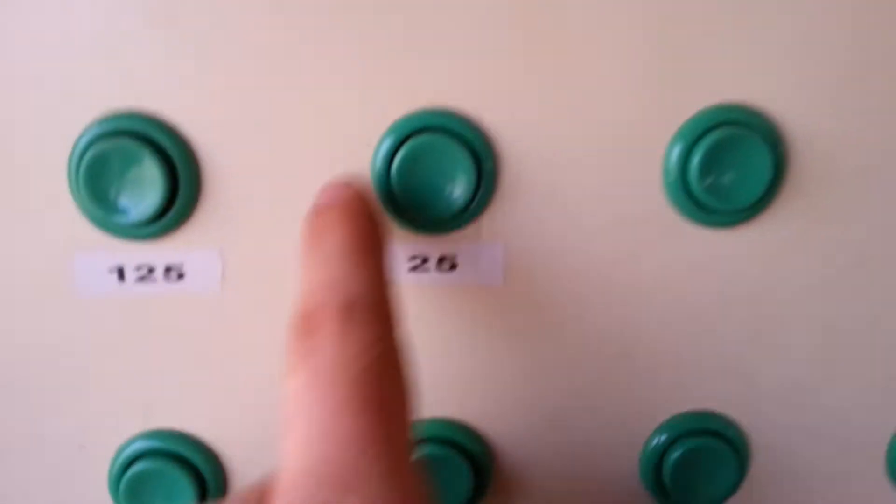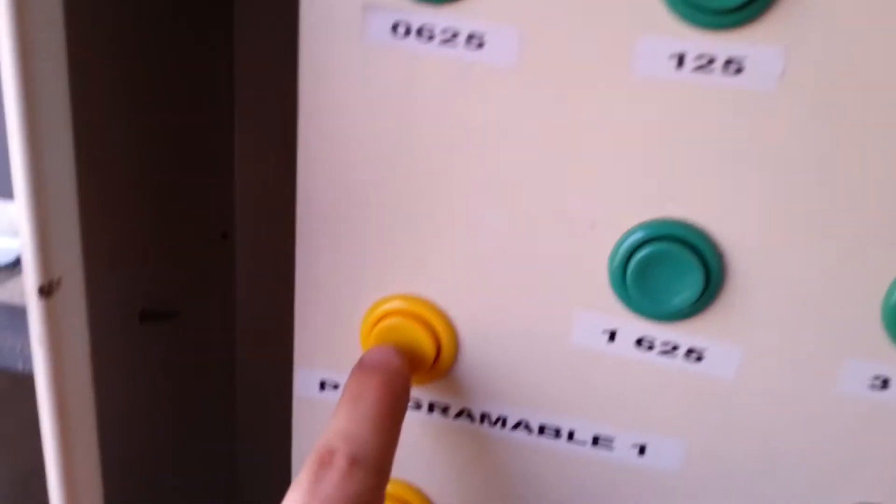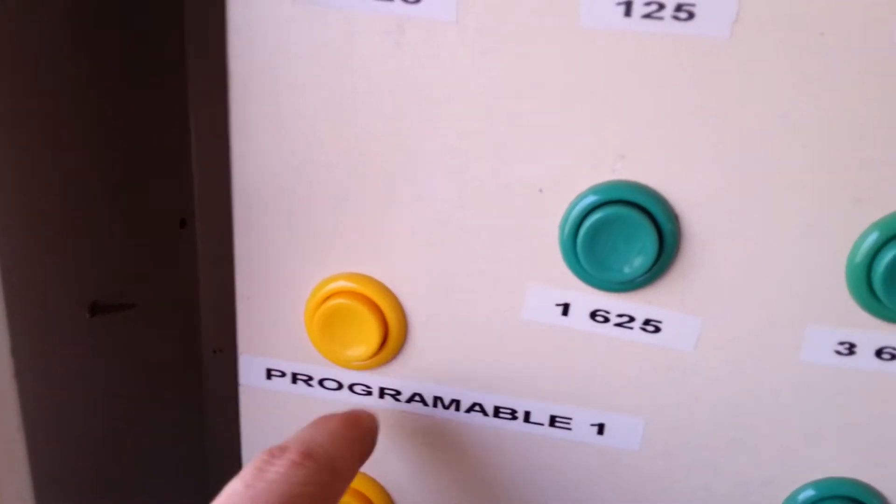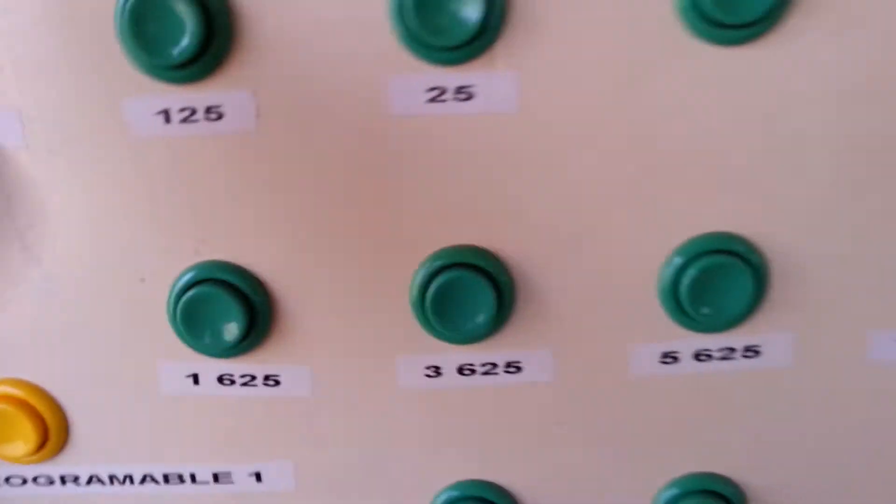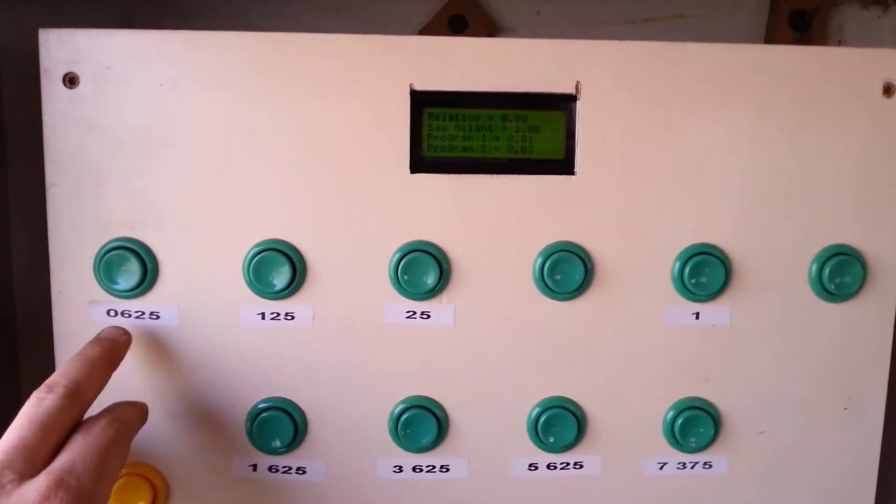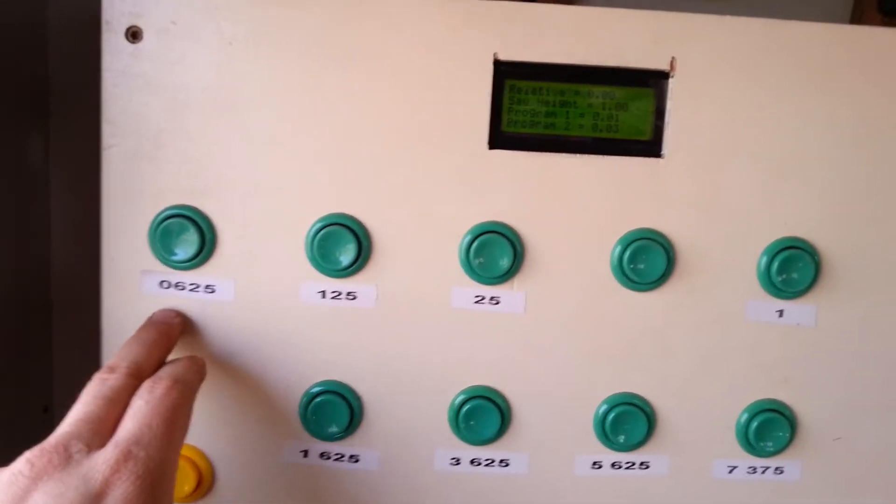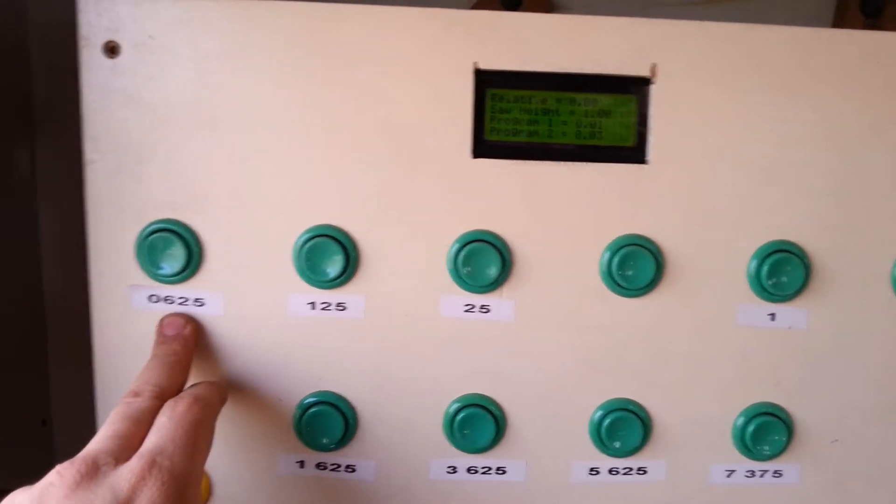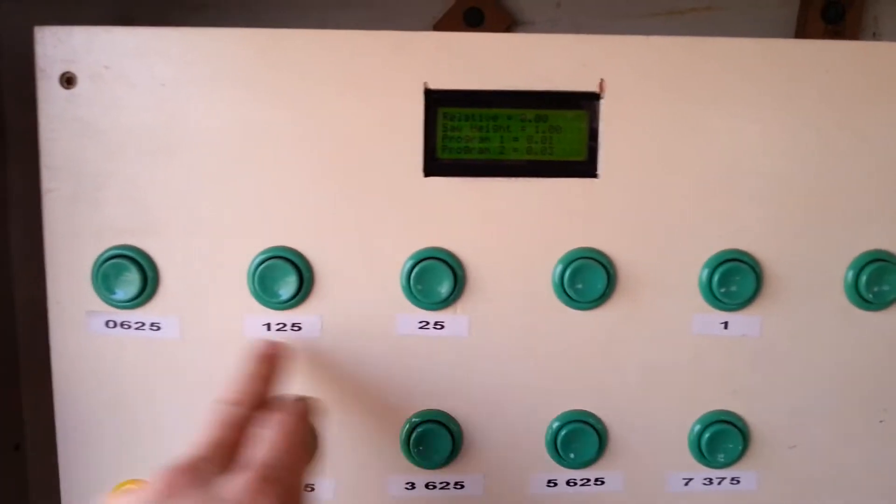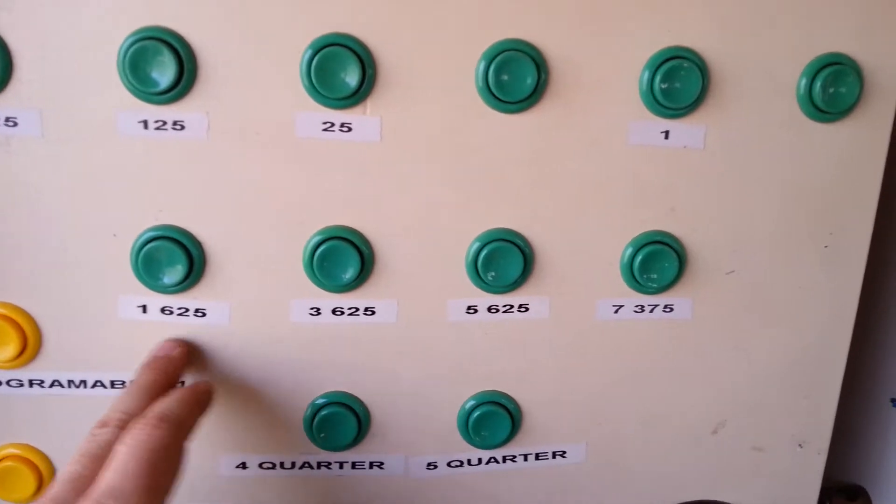They increment by multiples of two going up, so it's 1/16th, 1/8th, 1/4, 1/2, 1, 2. These are for building material - 2x4, 2x6, 2x8, 4-quarter and 5-quarter.